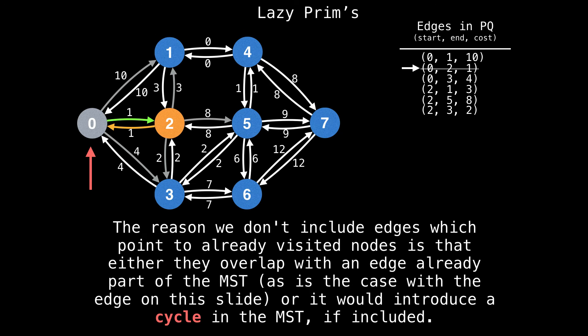The reason we don't include edges which already point to visited nodes is that either they overlap with an edge already part of the minimum spanning tree, as is the case with the edge on the slide, or they would introduce a cycle in the minimum spanning tree if included, which is forbidden.